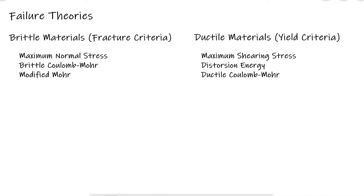Chances are that in your Mechanics of Materials course, most of the problems provided an allowable shearing stress or an allowable normal stress. After calculating your stresses for any given structural component, you would make sure that those stresses weren't higher than the allowable stresses. If a factor of safety was one of the questions of the problem, it was most likely defined as the allowable stress over the current stress, either for normal stresses or for shearing stresses.